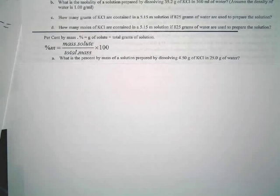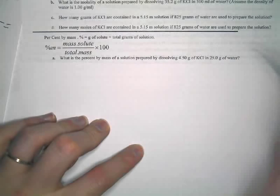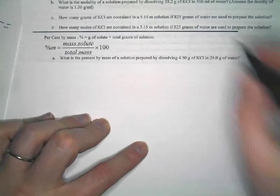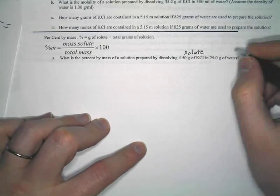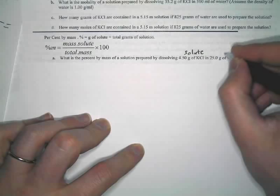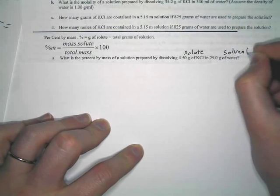Now, notice, this is asking, what is the percent by mass of a solution prepared by dissolving 4.5 grams of KCl and 25 grams of water? Well, this is really easy. This is like the easiest one we got. This just wants to know what the percentage of the total mass is a solute. So, which one of these is our solute again? 4.5 grams of KCl. That is our solute. Our solvent is always water, every time.